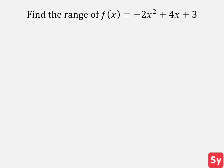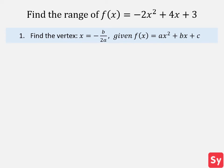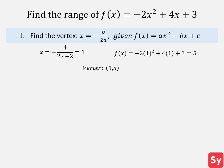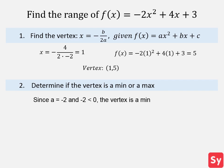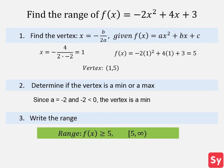Last example: find the range of f(x) equals negative 2 times x squared plus 4x plus 3. First, we find the vertex since the function is quadratic. We plug in the respective values to find the x-coordinate, then plug x into the function to get the y-coordinate. So our vertex is at 1, 5. Next, we determine if the vertex is a min or a max by looking at the value of a. a equals negative 2, which is less than 0, so the vertex is a min, meaning the parabola opens up. Finally, we write the range: f(x) is greater than or equal to 5.